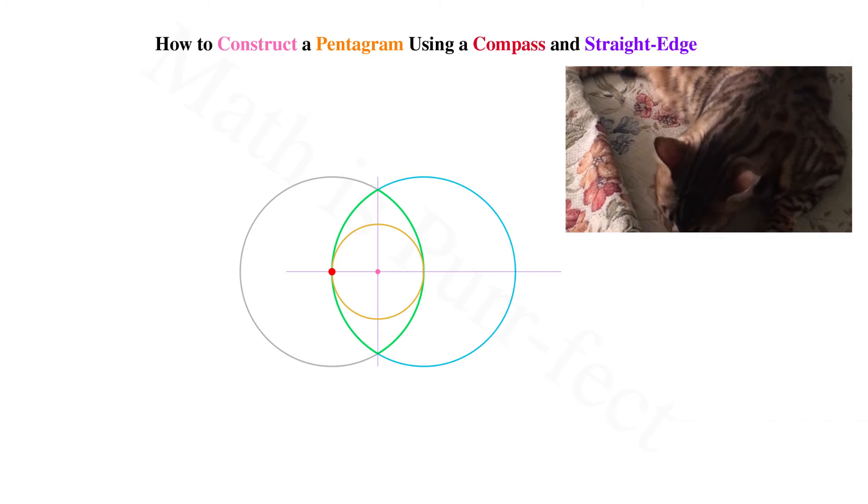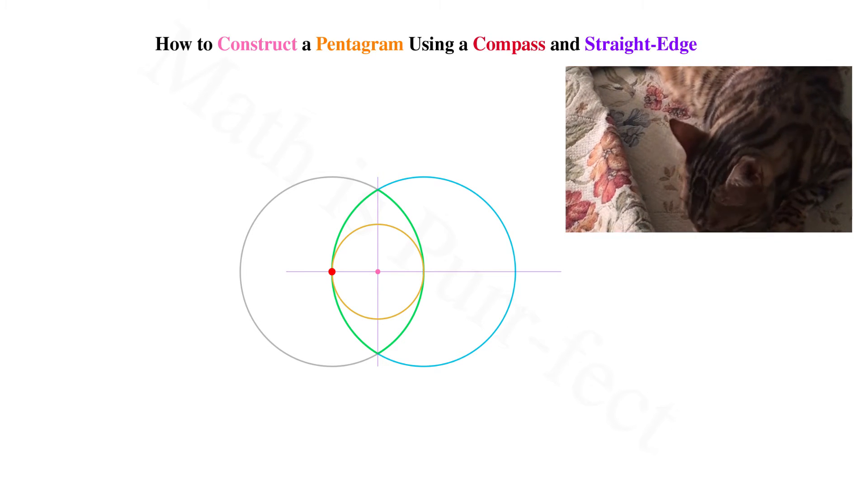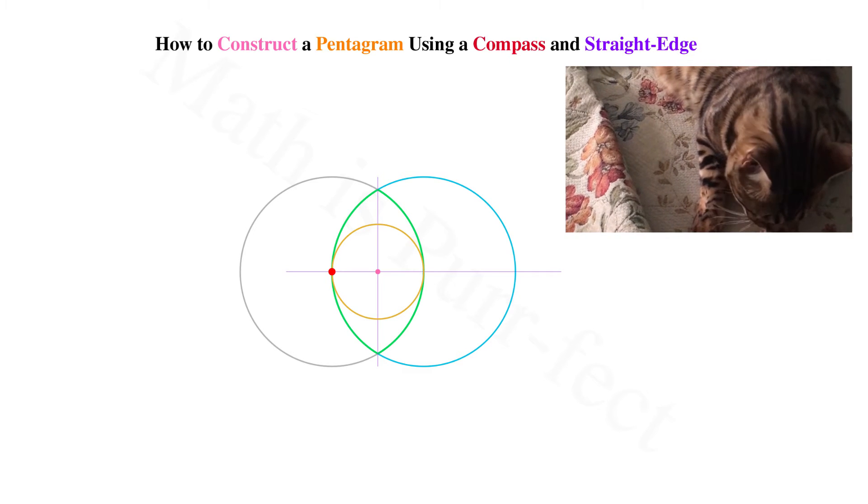Where the circumference of our original circle intersects the horizontal through the Vesica, seen here in red, is where we next place our compass point.